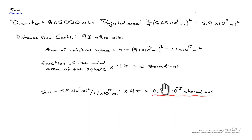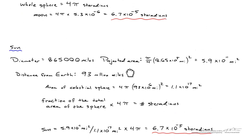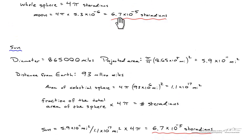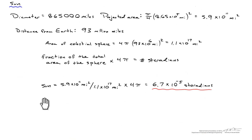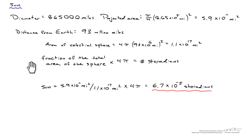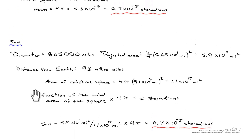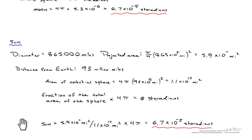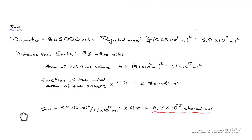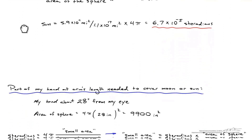Comparing this — about 6.7 × 10⁻⁵ steradians for the sun — with about 7 × 10⁻⁵ for the moon, to two significant figures we get the exact same value. You can imagine that during an eclipse, the moon completely eclipses the sun — it's right at the same size, and you see that corona coming off from the edge of the sun. The moon and the sun occupy the same area in the sky, and we can calculate that using steradians.